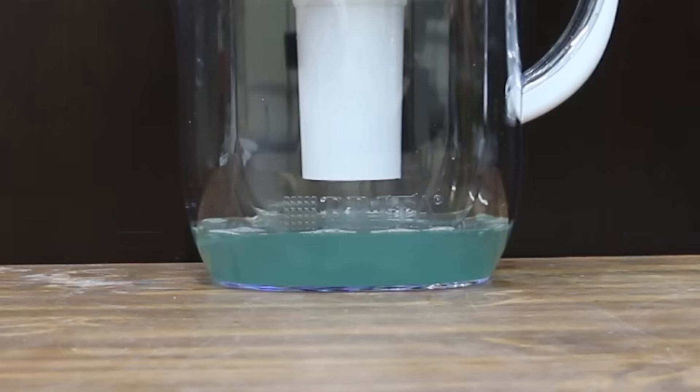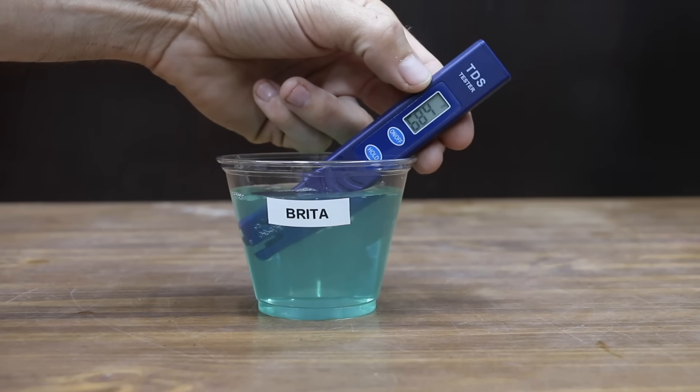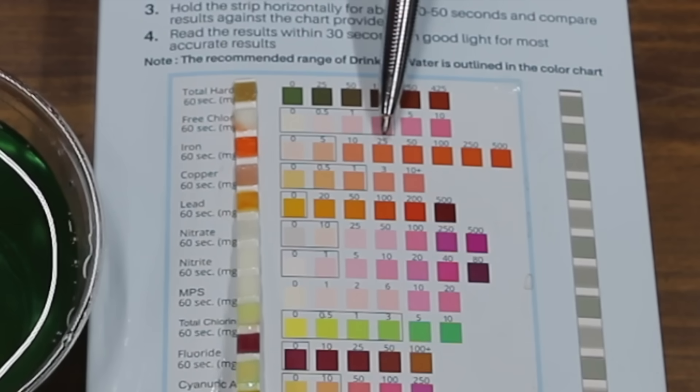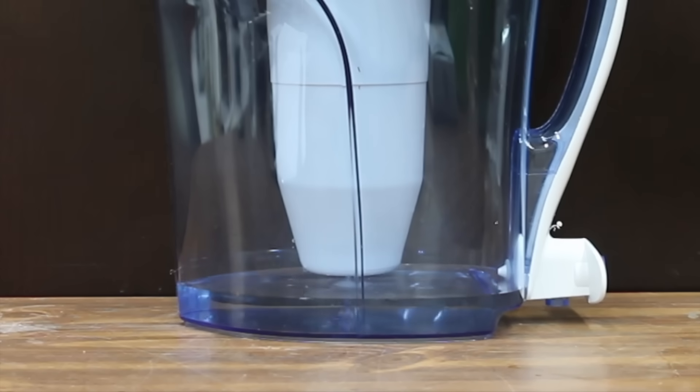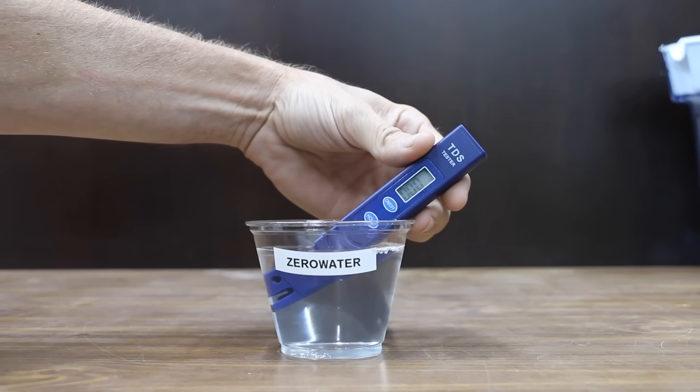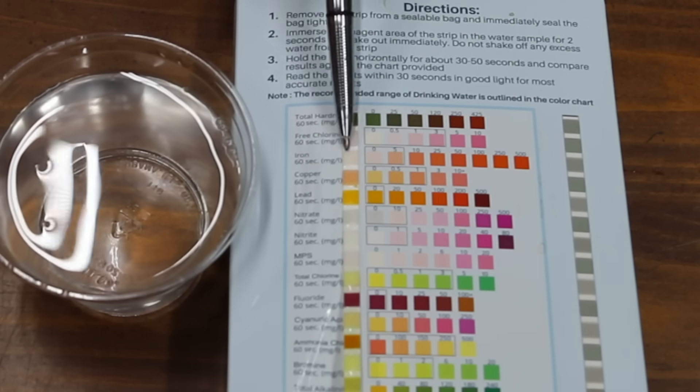The appearance of the Brita water looks very similar to the Pure. 684 parts per million of dissolved solids. The test strip for the Brita is showing that it did a better job removing the iron than some of the other brands at around 50 milligrams per liter. And the Zero Water has done by far the best job yet at improving the appearance of the water. Zero parts per million. And very impressive. The test strip is showing less than 5 milligrams per liter, which is by far the best yet.